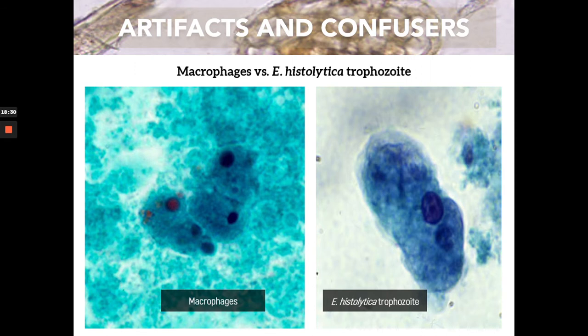WBCs are one of the most challenging structures to distinguish from amoebic cysts. Look for defining characteristics of cysts — chromatoidal bodies and the karyosome. If it's still difficult, stain with iodine using the D'Antoni's method, which can better visualize amoebic cysts.